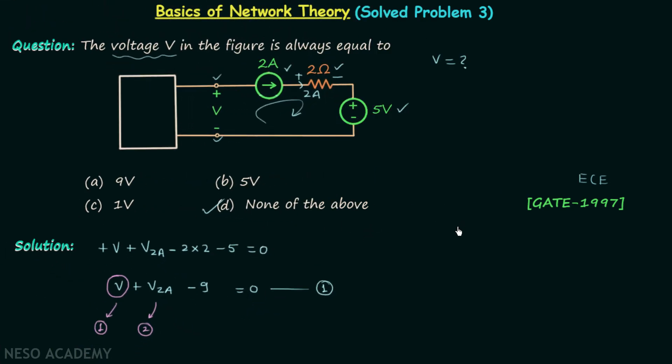So the most important point in this particular question is to understand that the voltage across the current source is dependent on the network in which it is connected.